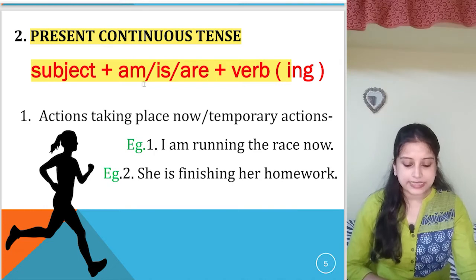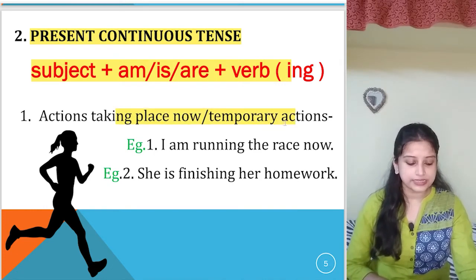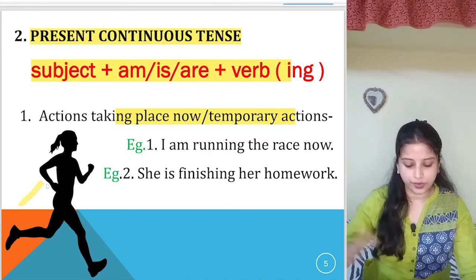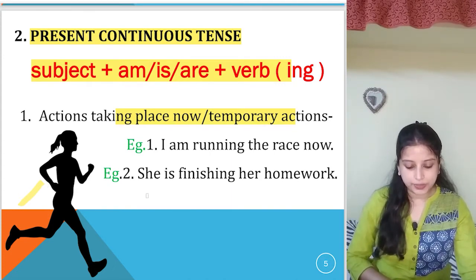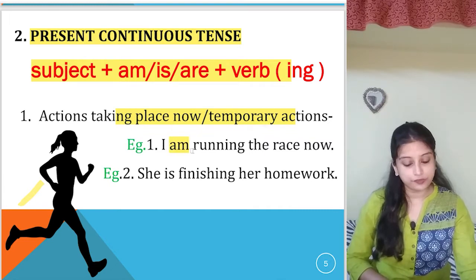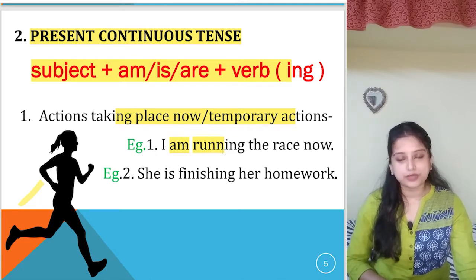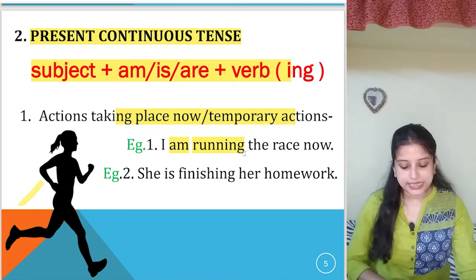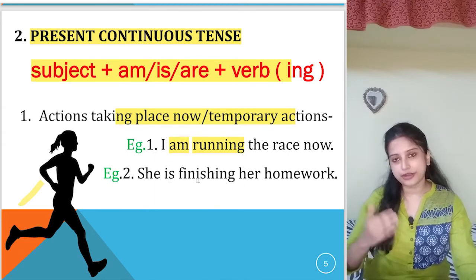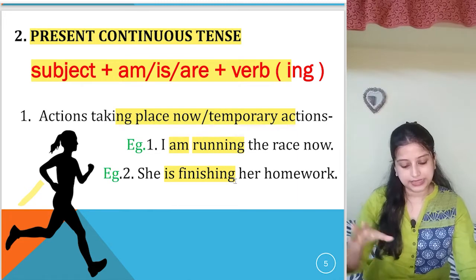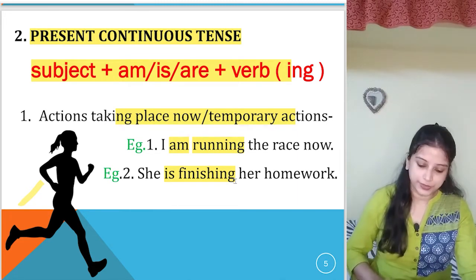For action taking place now or a temporary action — just like a picture of a girl running — the action is going on. So: 'I am running the race now.' 'She is finishing her homework' — at the present moment she is going on doing it. That becomes present continuous tense.